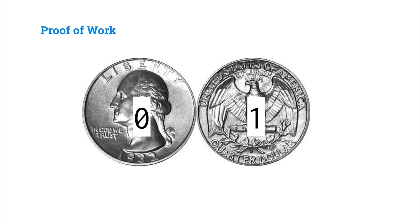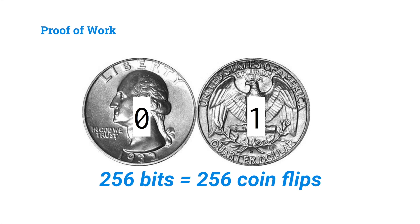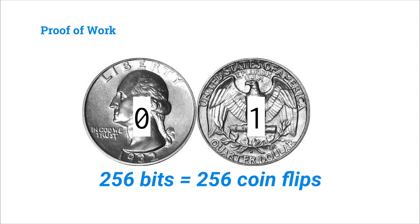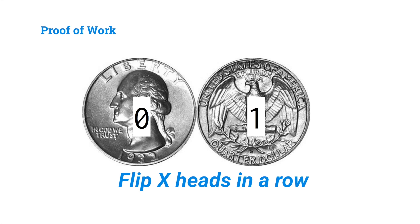We can think of a coin flip where heads is 0 and tails is 1. This process of incrementing the nonce and recomputing a random 256-bit output is like flipping a quarter 256 times — every time we get heads we write a 0, every time we get tails we write a 1. Every hash computation requires some computational power, and it would take a lot of hashes to flip a certain number of heads in a row at the very start.